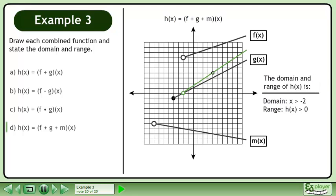All three graphs extend rightwards forever. The domain of h is x is greater than negative two, and the range is h is greater than zero.